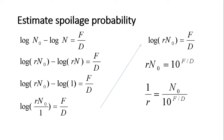When we rearrange and get the final equation, 1/R equals N-note divided by 10 to the power of F/D. We are actually getting the survivor population by dividing the initial population N-note by the population being eliminated, which is 10 to the power of F/D. So 1/R represents the spoilage probability — that is, one container with spoilage from the total number of containers processed, R.